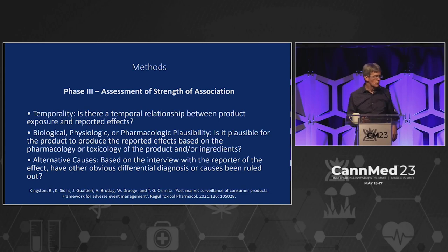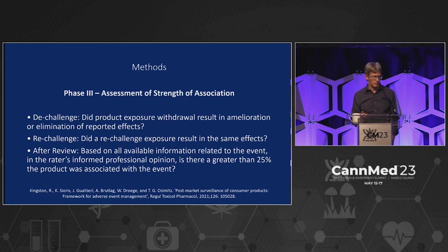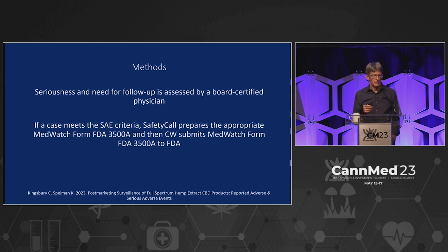Phase three is where the rubber hits the road — you actually get a healthcare provider, a physician experienced in adverse drug events, involved. They look at temporality, biological, physiological, pharmacological plausibility, and they look at alternative causes. Further in phase three: de-challenge — did product withdrawal result in amelioration or elimination of the symptoms? And then re-challenge — did a re-challenge occur? When we get to the SAEs, you'll be disappointed because a lot of times this wasn't done. After the review, a board-certified physician determines seriousness and need for follow-up. If a case meets the serious adverse event criteria, Safety Call prepares the appropriate MedWatch form and reports it.